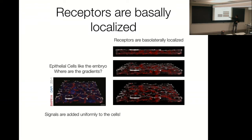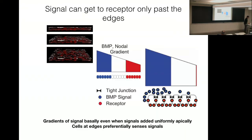Adding signal uniformly to the top doesn't mean you've added signal uniformly at all. We've confirmed this in the mouse embryo too — same thing happens. All receptors are on the basal side. They contain a very specific amino acid motif conserved in all TGF-beta, BMP receptors across all species. We can mutate this sequence and mislocalize the receptor. So even if you add signals uniformly on top, signals have to go around the cells to reach the receptor, generating a gradient — and that's why you see spatial structure.